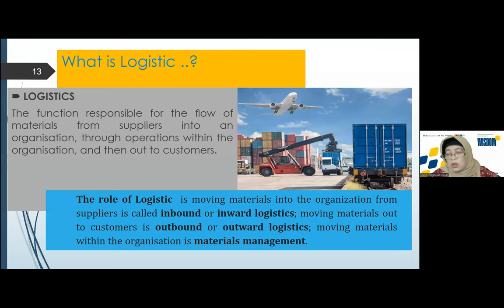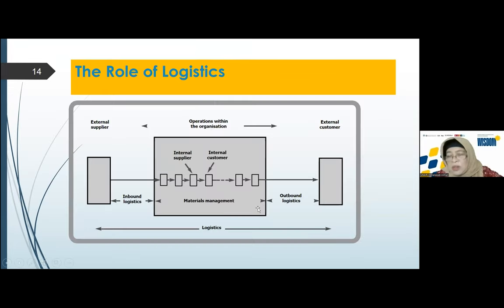So we can see here: inbound logistics is coming in. In the organization, in the manufacturing, we call it material management — from one place to another. That is also a responsibility of logistics. And then outbound logistics goes out. So all of this is the role of logistics — about moving the material from supplier to the end customer.